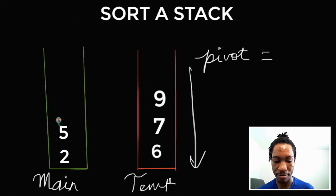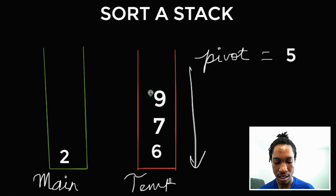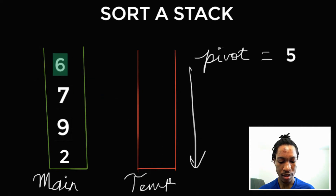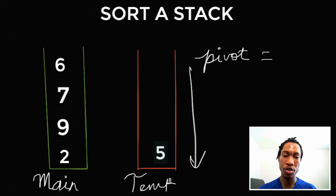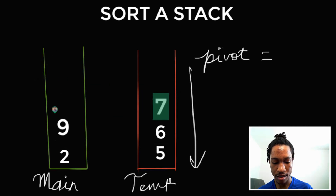Our pivot value becomes 5. We order the elements in temp with respect to 5. We get to 9 — is 9 greater than 5? Yes, pop it out. We get to 7 — greater than 5, pop it out into main. We get to 6 — greater than 5, pop it out into main. There are no other elements in temp, so we put 5 into temp. Then we push all the elements that we popped back in — 6, 7, and 9 — since they were greater than 5 and should come after it.